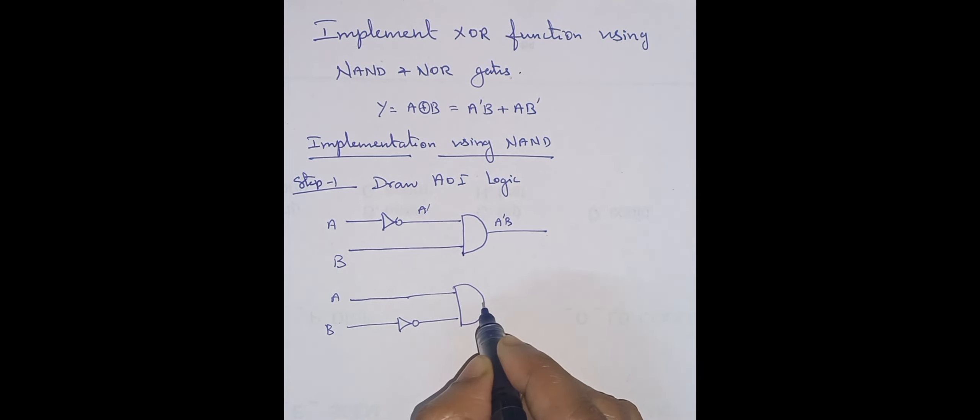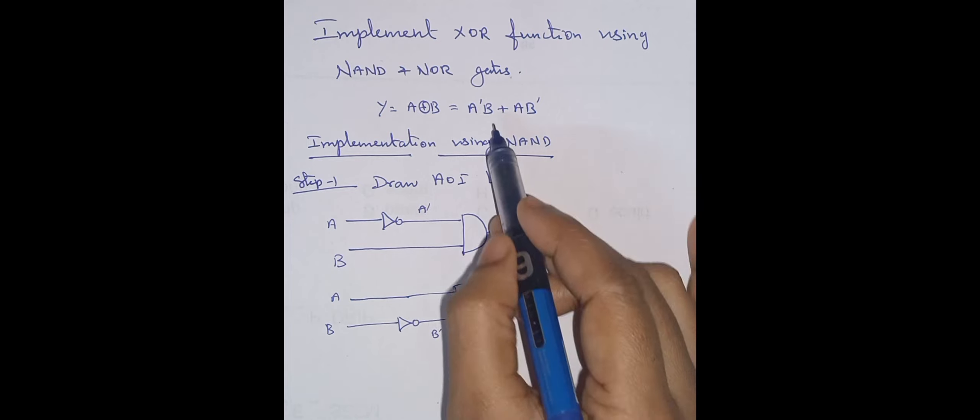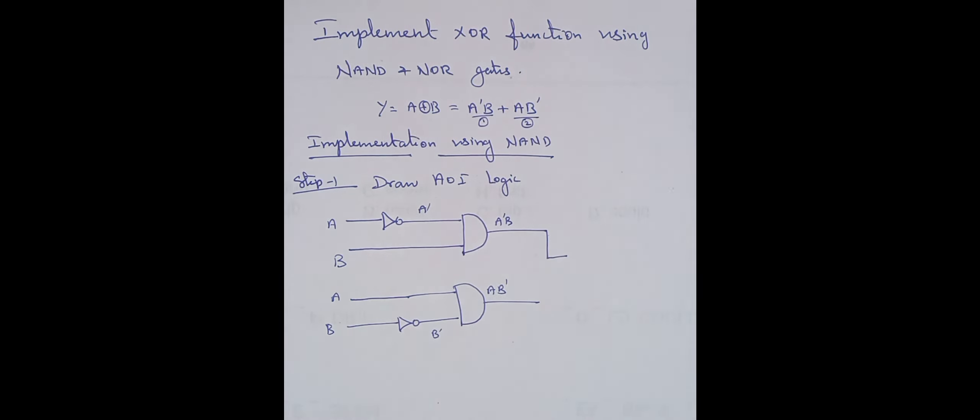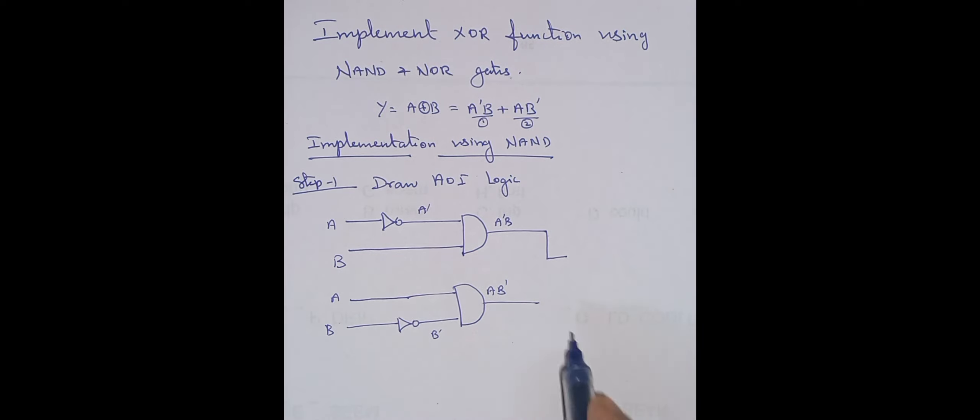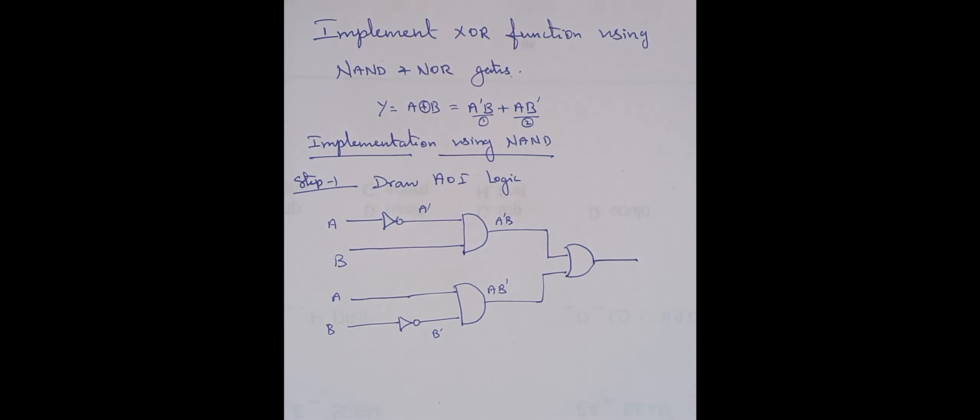Then again, we have the second term is AB dash. So A as it is and then B is inverted. I will get B dash here. The output is A B dash. Both the terms are ORed together, so both outputs are given to the OR gate. This is your first step.